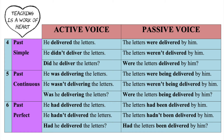He delivered the letters. The letters were delivered by him. He didn't deliver the letters. The letters weren't delivered by him. Did he deliver the letters? Were the letters delivered by him? He was delivering the letters. The letters were being delivered by him. He wasn't delivering the letters. The letters weren't being delivered by him. Was he delivering the letters? Were the letters being delivered by him?